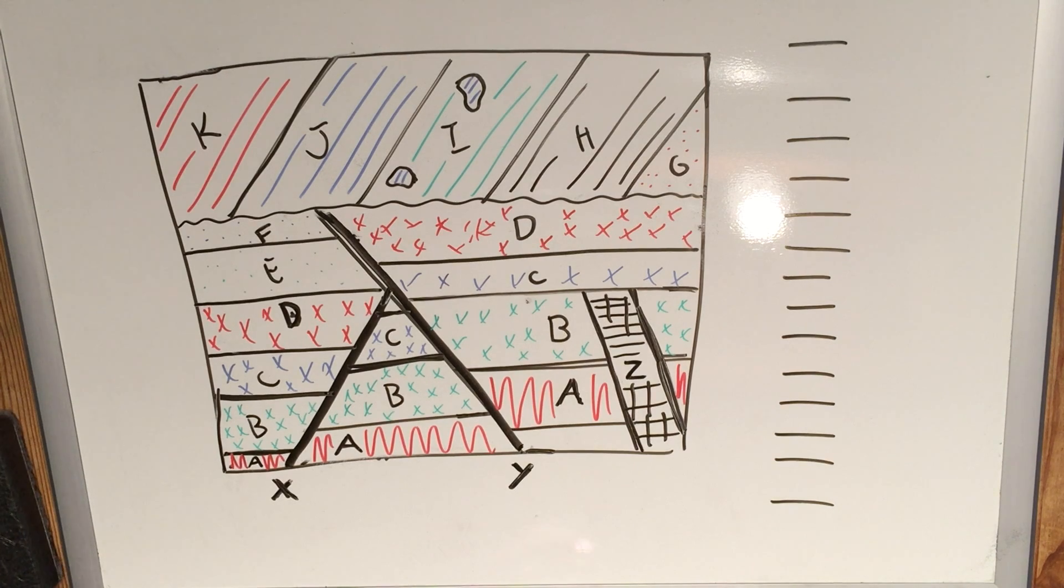Happy New Year everyone, and we're going to get right into a second relative dating example here. I did a video previously on a much simpler relative dating, and I figured it's good to do multiple of these because being able to date rocks when they're presented in this sort of two-dimensional cross-sectional diagram format really is the bread and butter of understanding these types of diagrams.